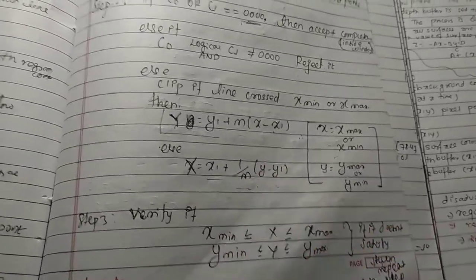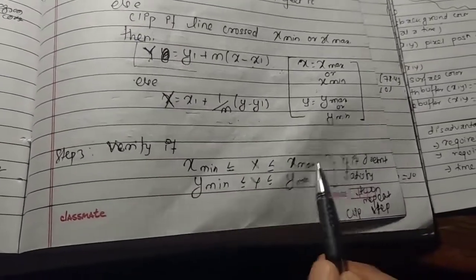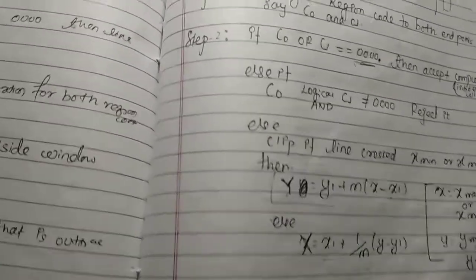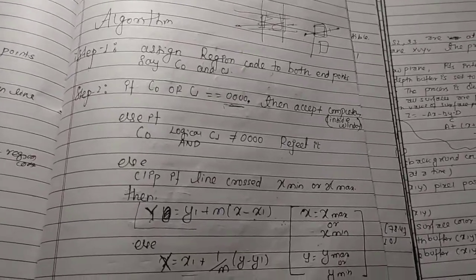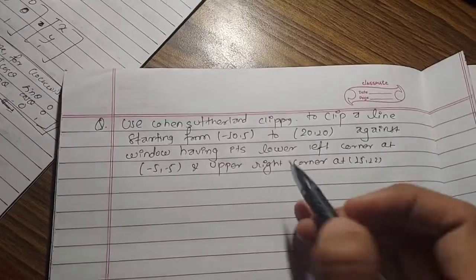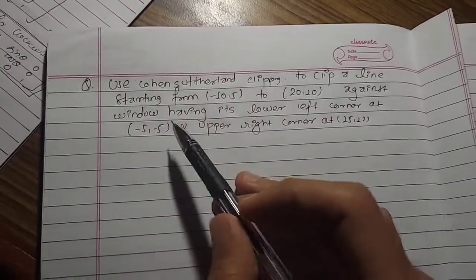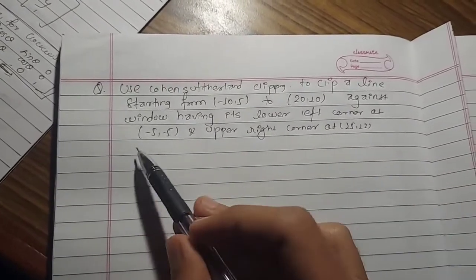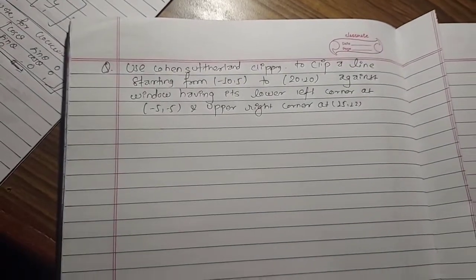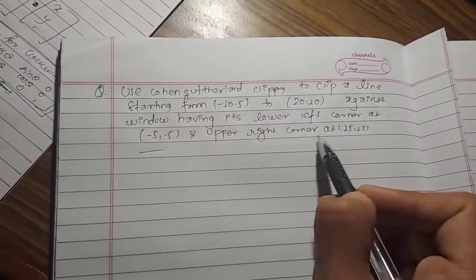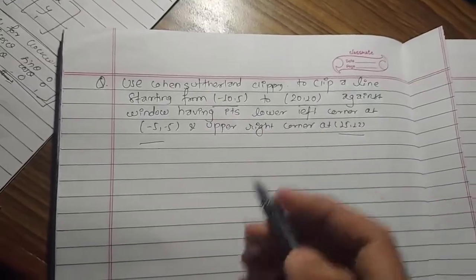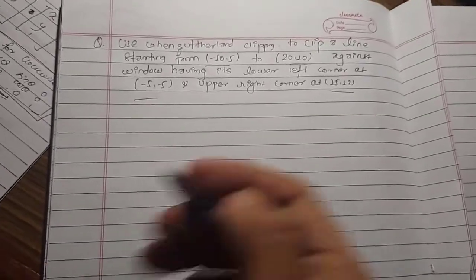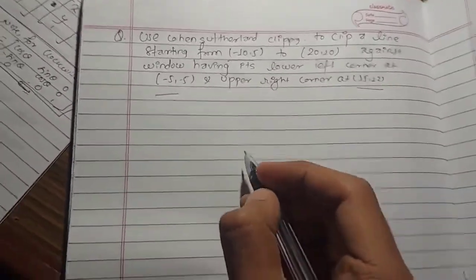Now let's look at an example using the Cohen-Sutherland clipping algorithm. The question is: clip a line starting from minus 10 comma 5 to 20 comma 10, against a window with lower left corner minus 5 comma minus 5 and upper right corner 15 comma 2. We read the window coordinates and the line endpoints.